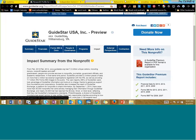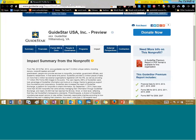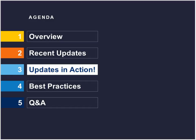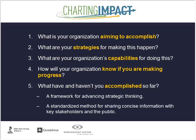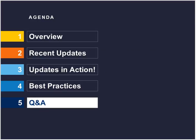So those are some best practices. A quick recap: find several NPO managers; any website is great, even Facebook; be sure to check out the Independent Sector charting impact resources, which have a ton of great examples; and get to a participation level, as it's one of the best ways to drive traffic to your site. With that, let's go ahead and move on to Q&A — I'd love to hear your questions.